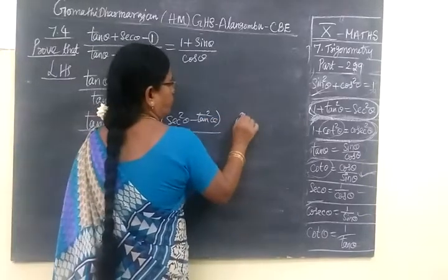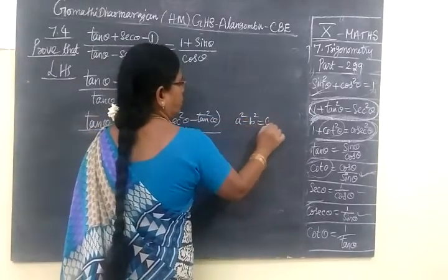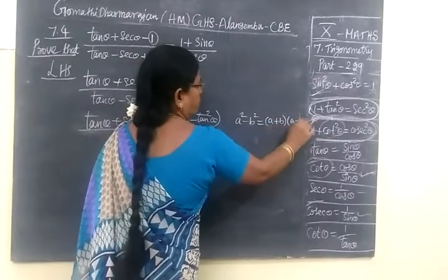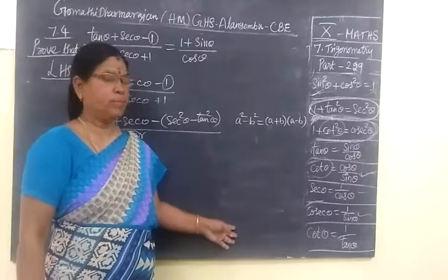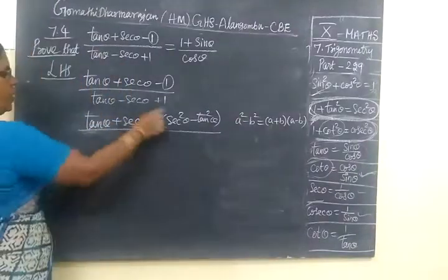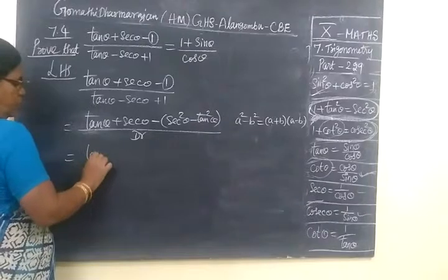This is of the form A² - B². Then A + B into A - B. We often use this identity in this chapter. Then A + B into A - B.